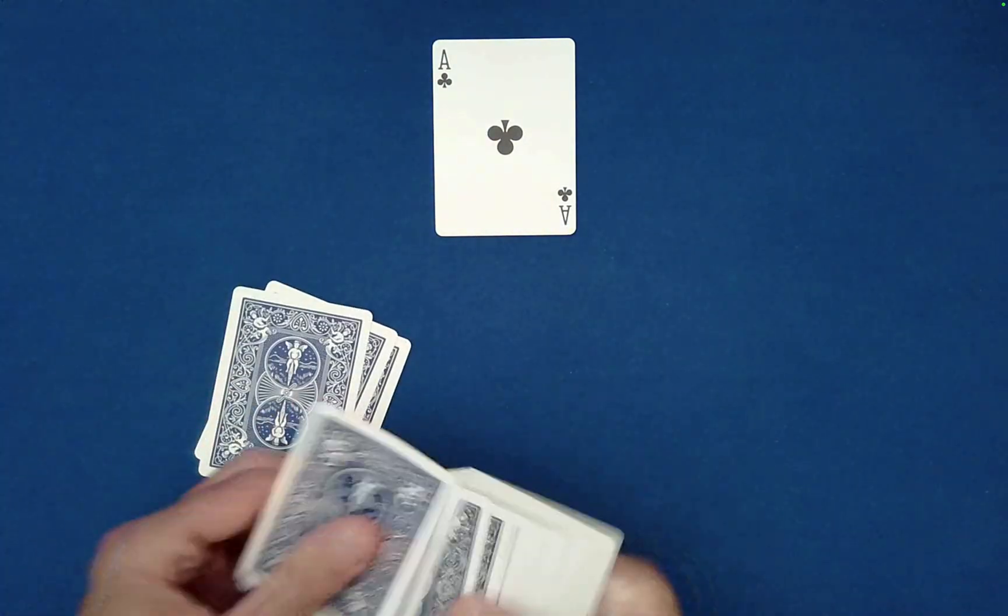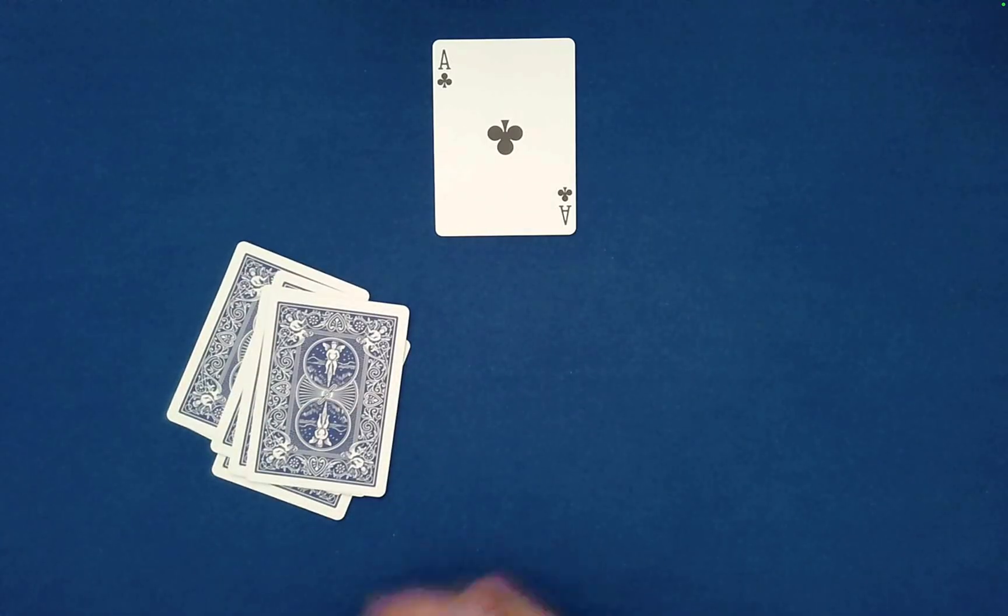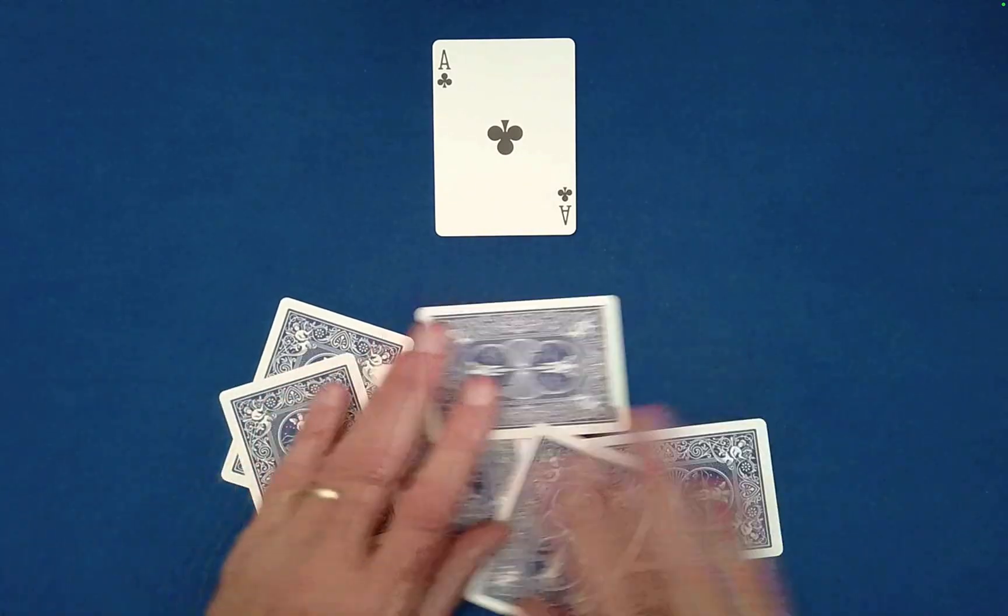So all you need is the ace of clubs for this and then you need six random cards - one, two, three, four, five, six.